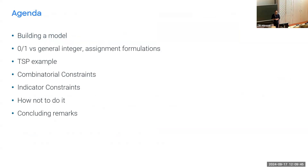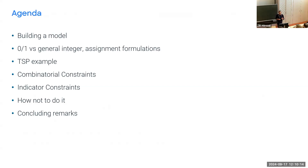I want to talk generally about the process of building a model, then focus on which decision variables to use in MIP. We often have the question of binary versus general integer variables. On a TSP example I want to discuss the many choices you have when modeling something and the impact they can have on solving. We'll look at some special constraints — logical constraints and indicator constraints, which you'll also see in the afternoon exercise — and then some concluding remarks on how to approach modeling.